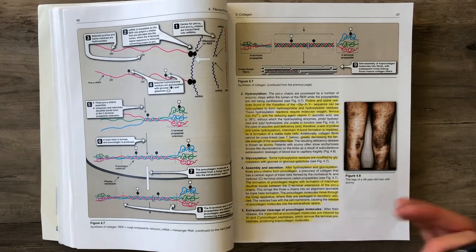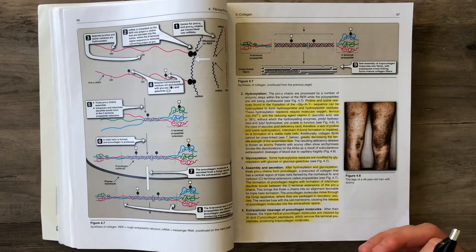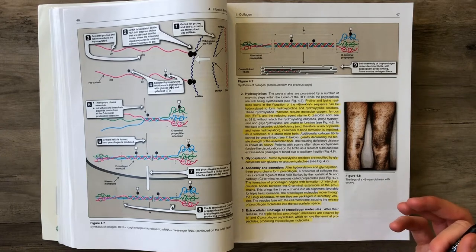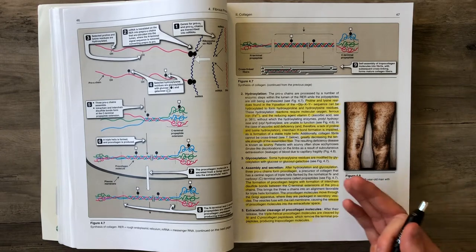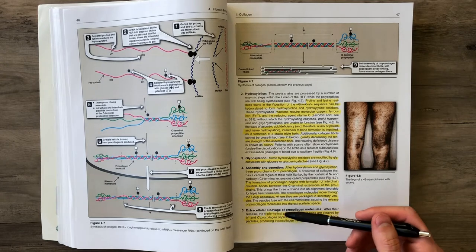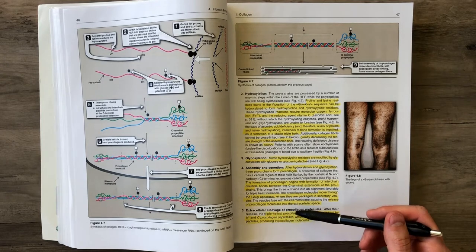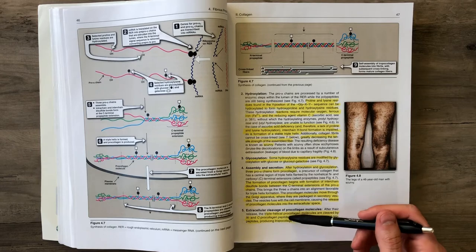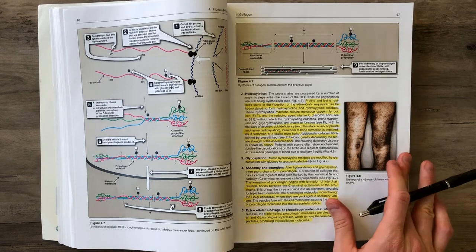In the extracellular space, you have pro-collagen. That pro-collagen gets cleaved by N and C pro-collagen peptidases to remove the terminal peptides and create tropocollagen molecules.